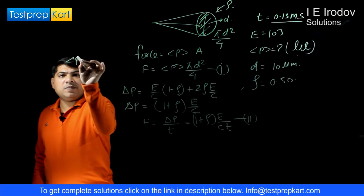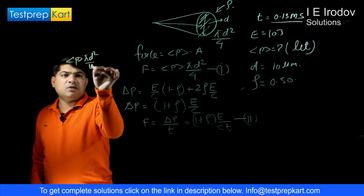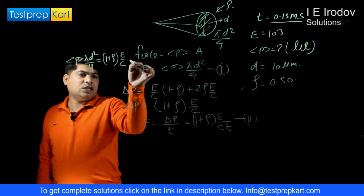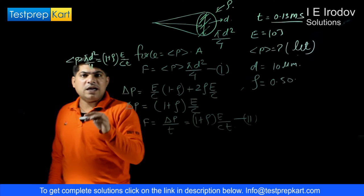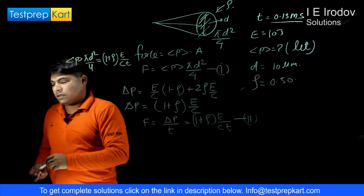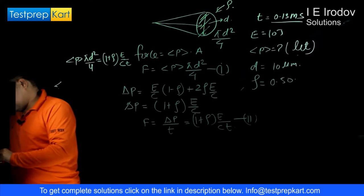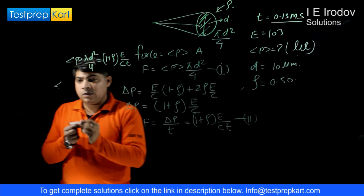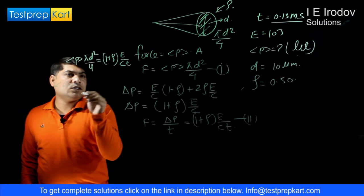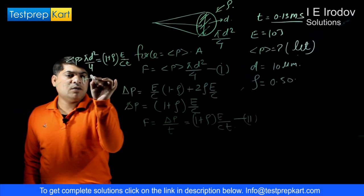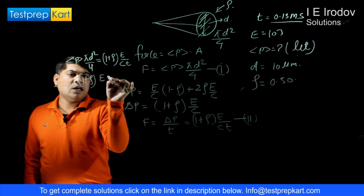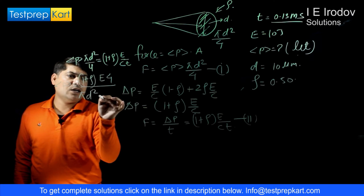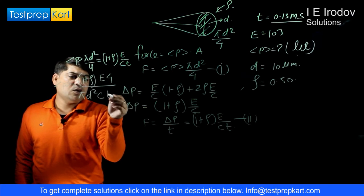So this is mean pressure into pi d square by 4 equals 1 plus rho into E over C T. So from here we can get this mean pressure P equals 1 plus rho into 4 divided by pi d square C into T.